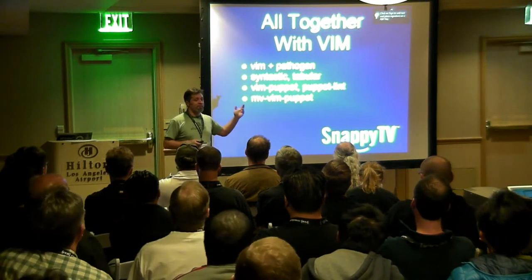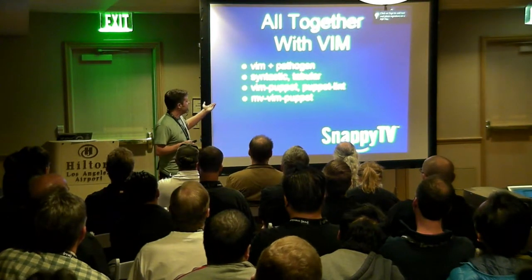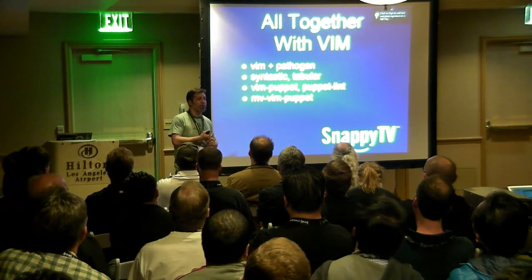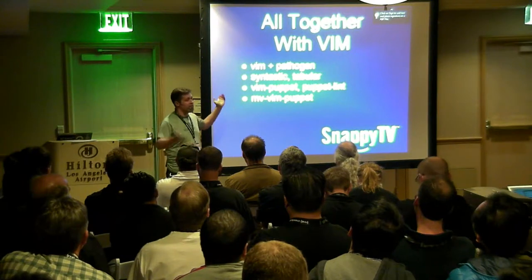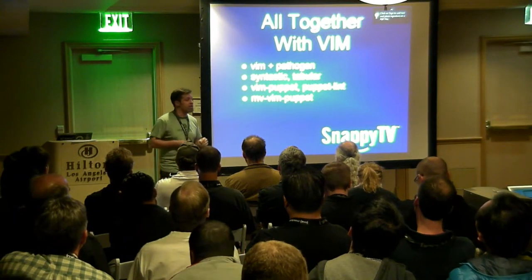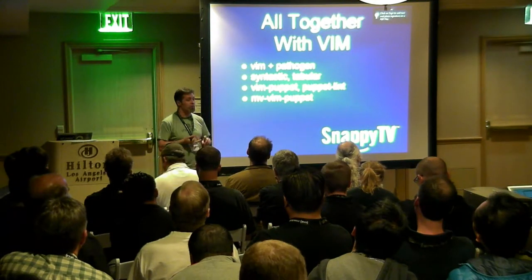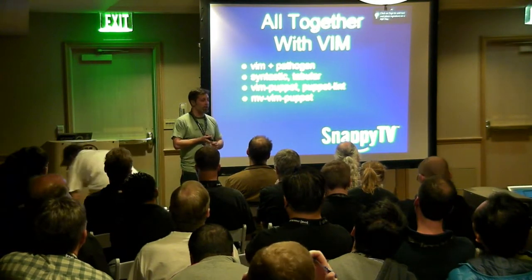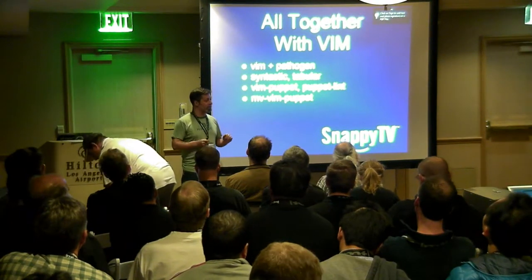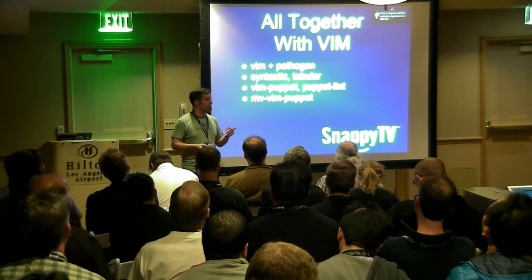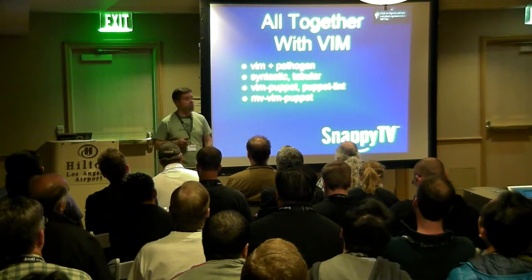For the 90% of you that use Vim, it's pretty easy to put all of this together. Install Pathogen, which basically auto-loads other plugins for you, then install those plugins and you're done. This gives you all the syntax highlighting. When you save a file, it automatically runs puppet-lint and then puppet parser validate on it. It picks out which lines have errors. You really have to stop thinking about it — it just happens for you every time you save the file.